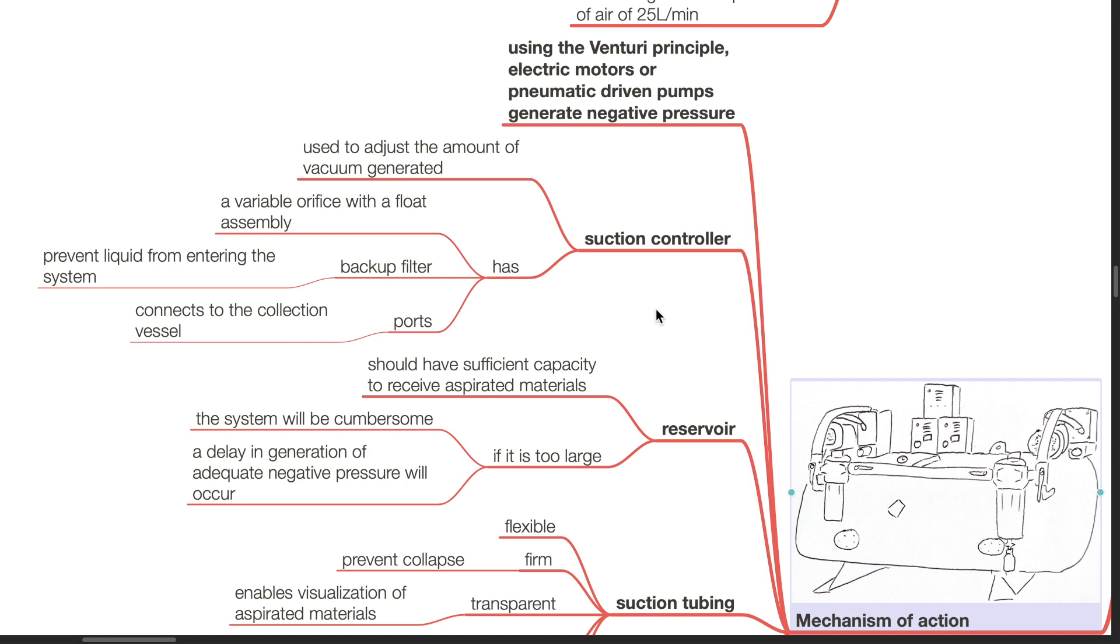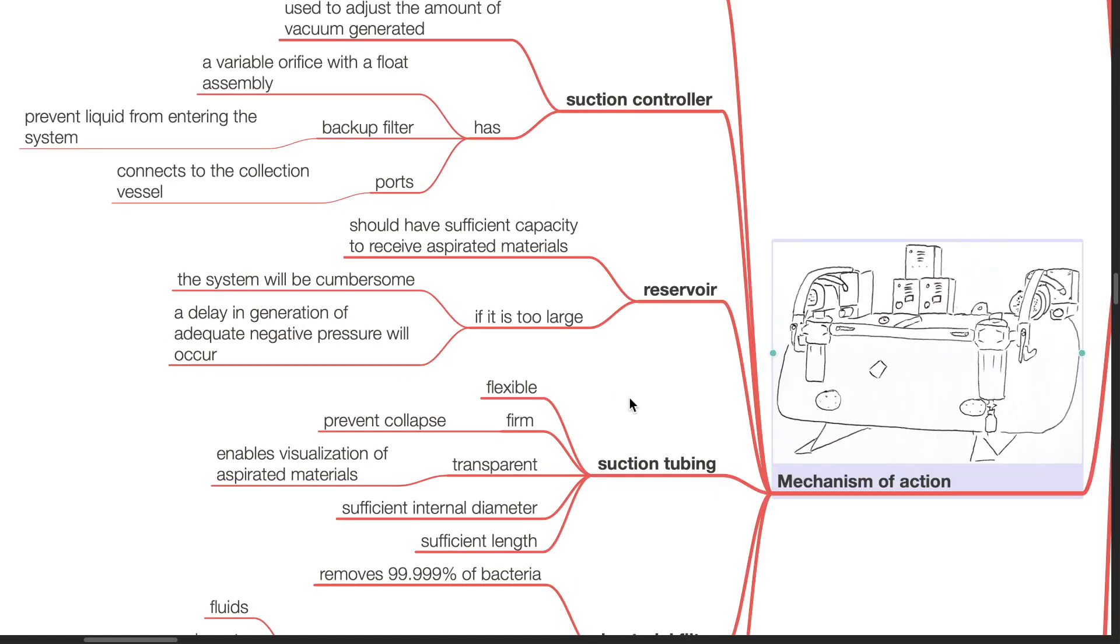Reservoir should have sufficient capacity to receive aspirated materials. If it is too large, the system will be cumbersome and a delay in generation of adequate negative pressure will occur. Suction tubing should be flexible, firm to prevent collapse, transparent to enable visualization of aspirated materials, and have sufficient internal diameter and sufficient length.